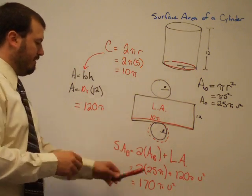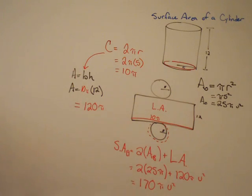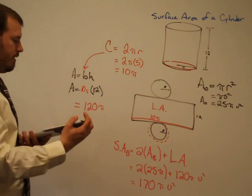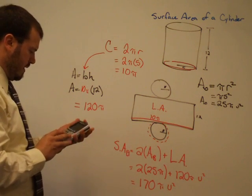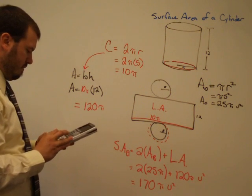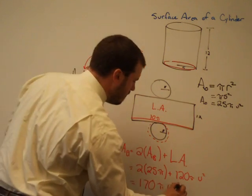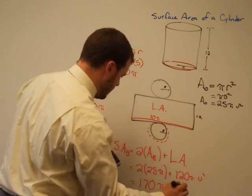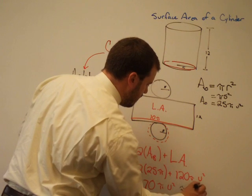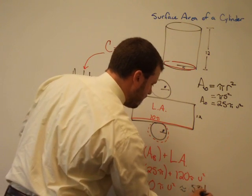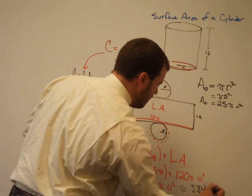Now, leaving it in terms of pi, I have the exact form, or the exact answer. If you want a decimal approximation, you can use your calculator to determine that by just typing in 170 times pi, or an approximate value of 534.1 units squared.